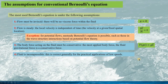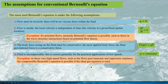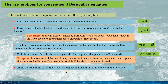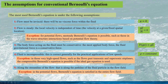The fluid is incompressible — this is correct generally for practical applications when the flow velocity is small, therefore the fluid density would be a constant. The exception for this assumption is in very high speed flows, such as flows past transonic or supersonic airplanes, where the compressible Bernoulli's equation must be used if the ideal gas equation can be applied. For the conventional Bernoulli's equation, it is correct along the streamline of the flow. The exception is in potential flows, where Bernoulli's equation is satisfied in the entire flow field.